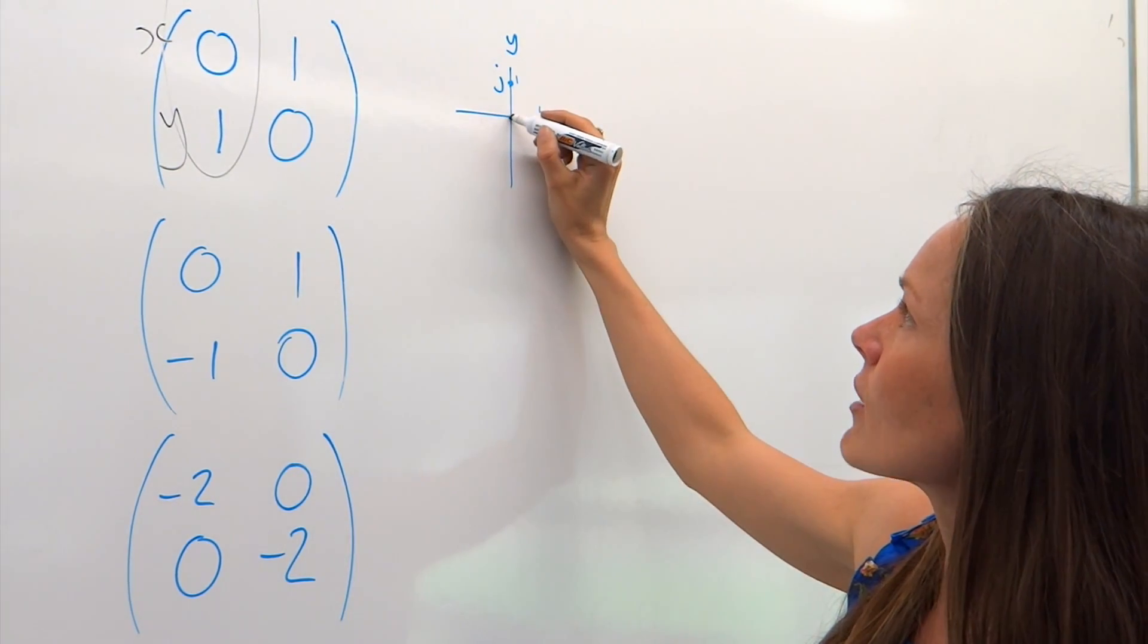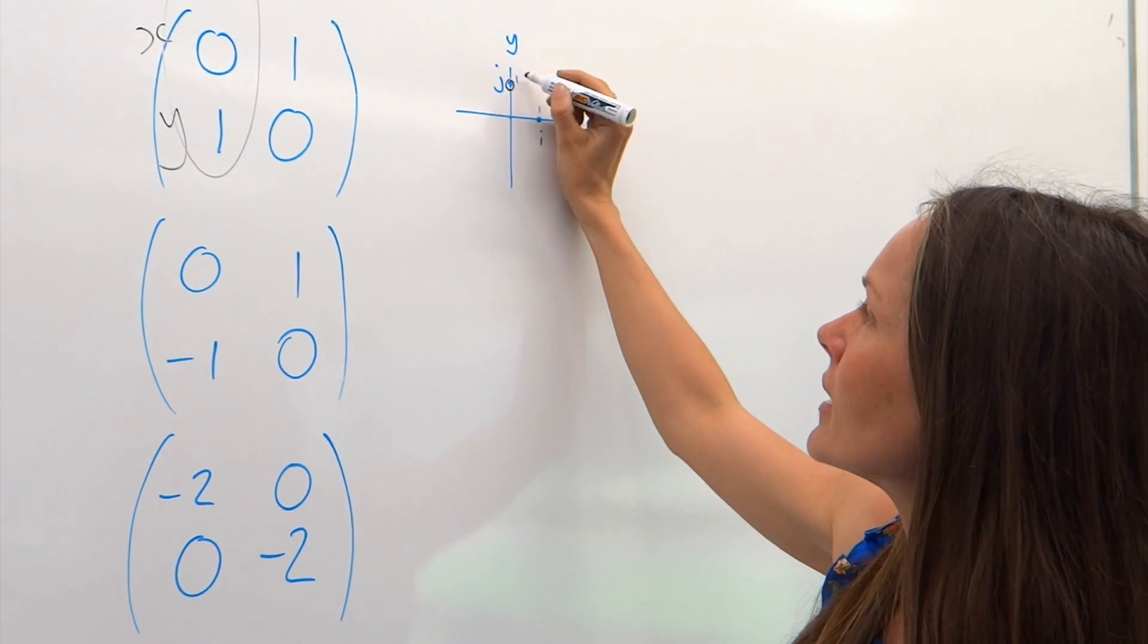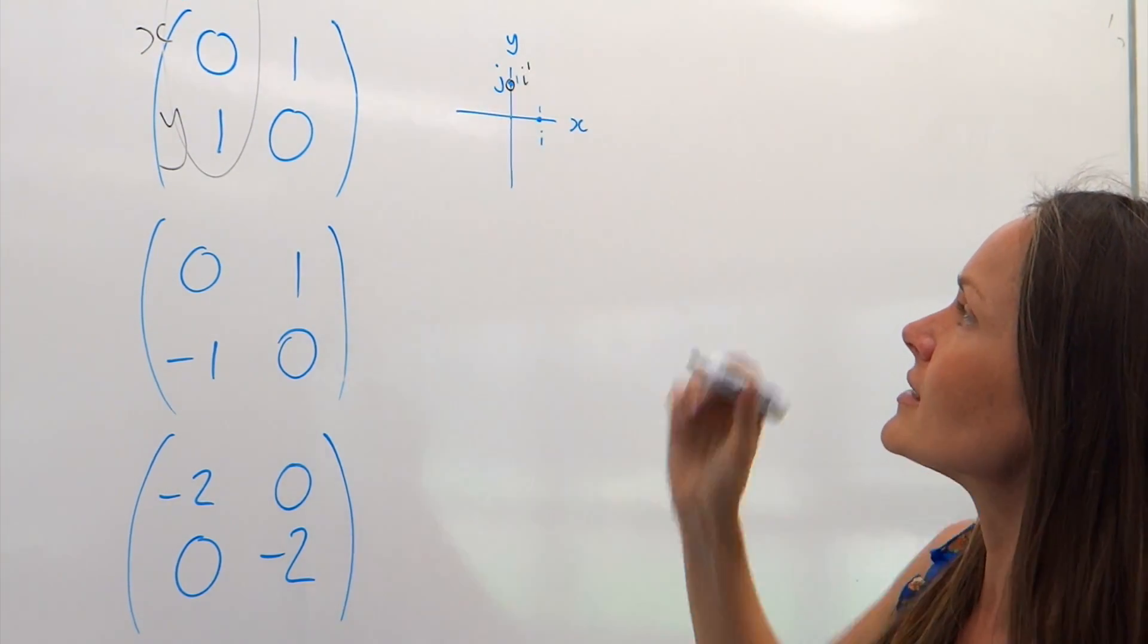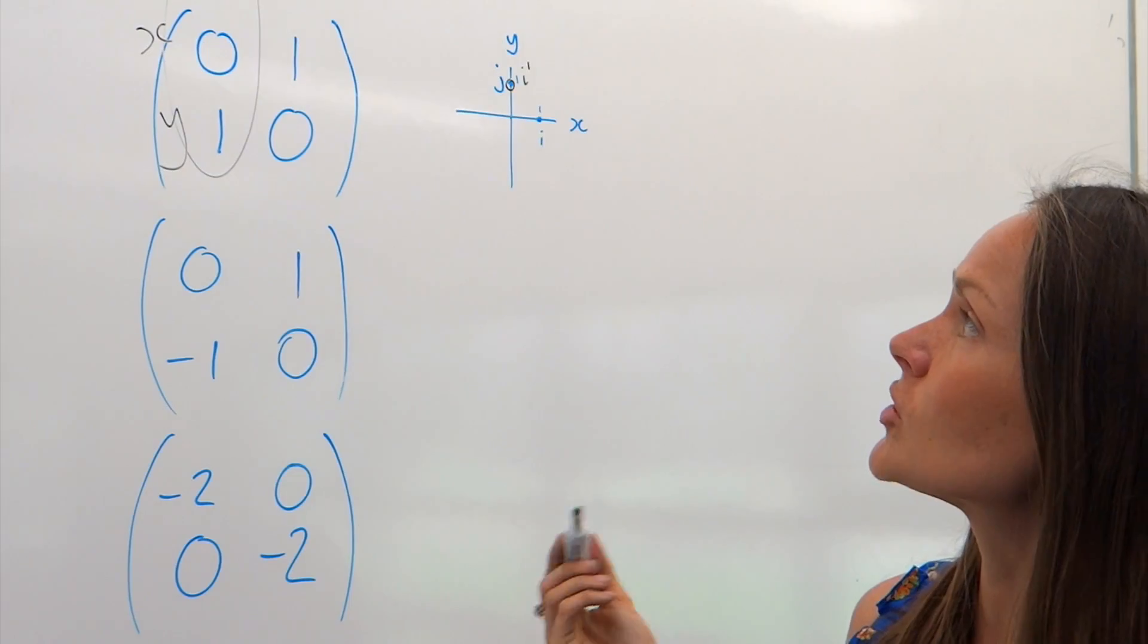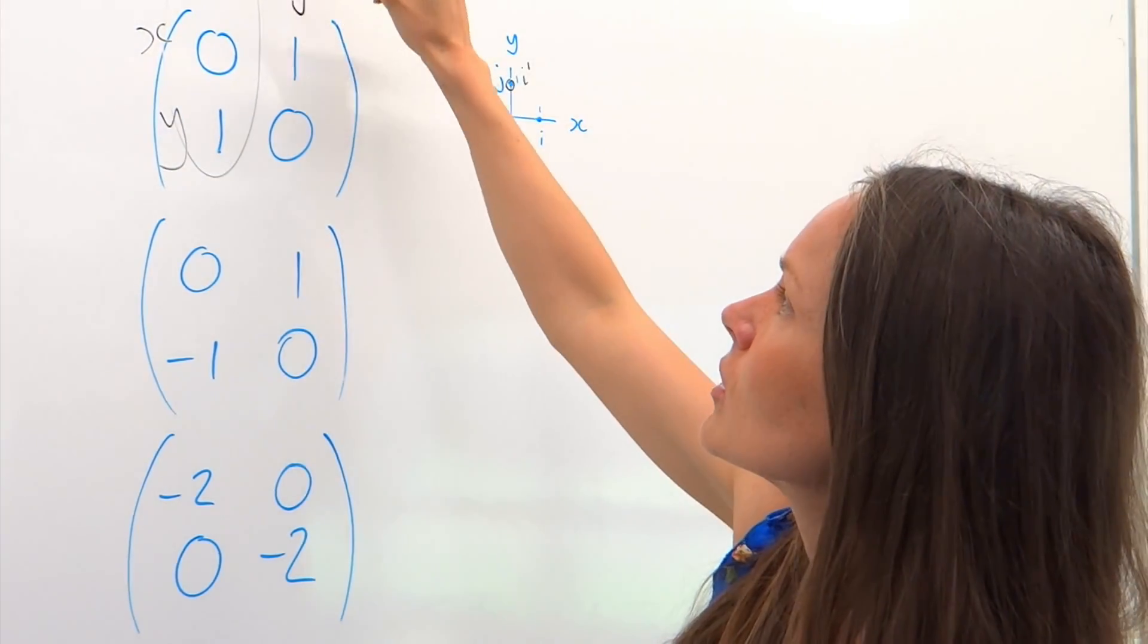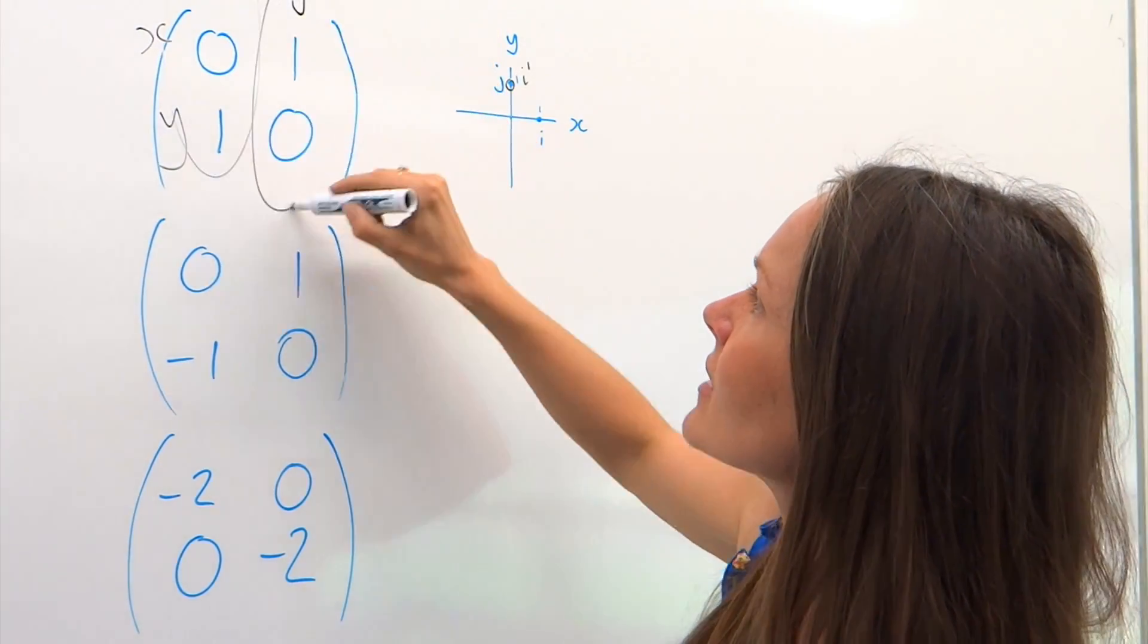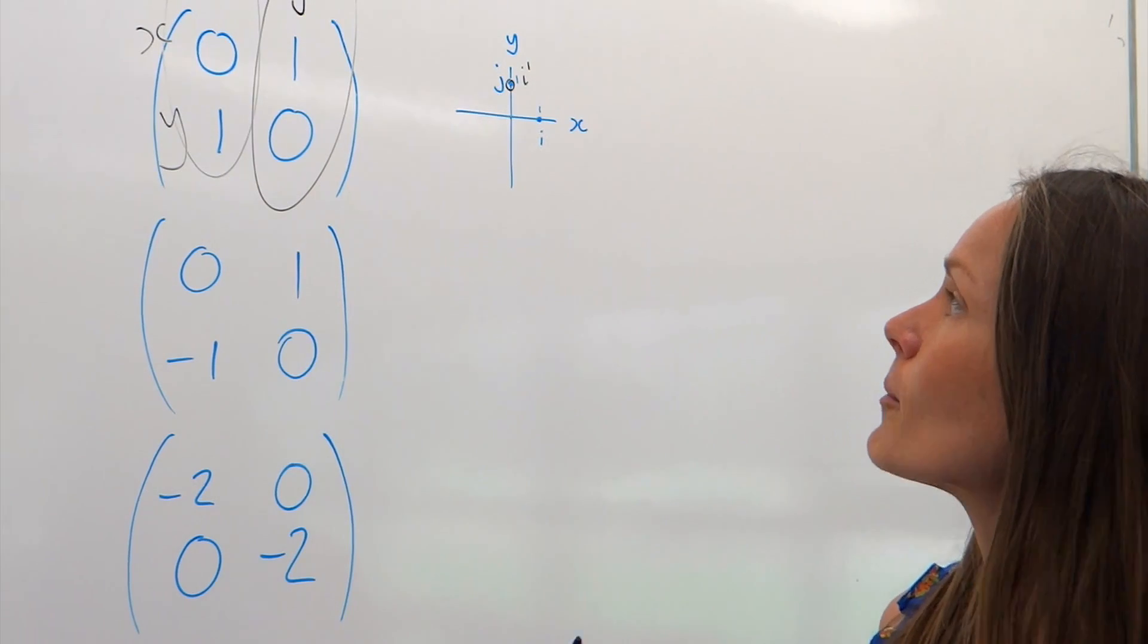So, x is zero, y is one. So, i is now up there. So, i dash is in the same position as j. Now, I'm going to do the same thing with j, and I'm going to plot the coordinates of j dash. So, the image of j after the transformation.